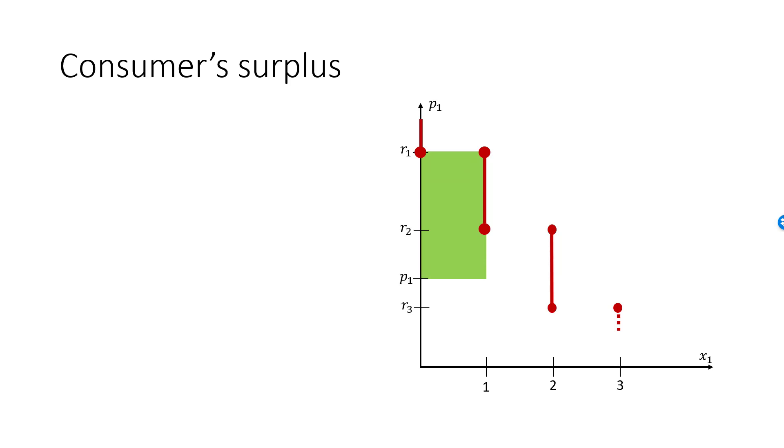We will call this difference the consumer surplus from the first unit and it equals this green rectangle. It's a benefit that falls to the consumer simply because she's able to purchase something for a price less than the value she associates to it. Similarly, the consumer surplus from the second unit is the difference r2 minus p1, this smaller green rectangle.